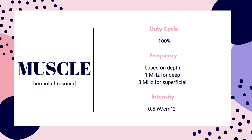To help increase tissue extensibility and decrease stiffness, it is best done through thermal ultrasound. The main difference for thermal ultrasound is that it has a 100 percent duty cycle, and you're going to keep the intensity closer to 0.5 watts per centimeter squared. Since the duty cycle is 100 percent, it will cause a heating effect. When you turn up the intensity, you might decrease the amount of time that you administer the ultrasound to prevent overheating. The frequency is still based on depth, just like with non-thermal ultrasound.